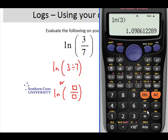Press clear. So natural log of 3 divided by 7, close brackets, definitely close brackets this time, equals, and we get negative 0.8473 to four decimal places.